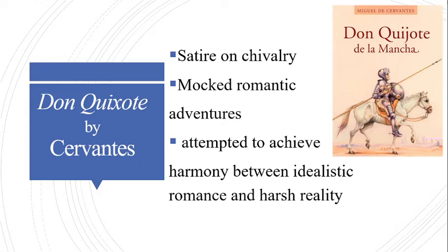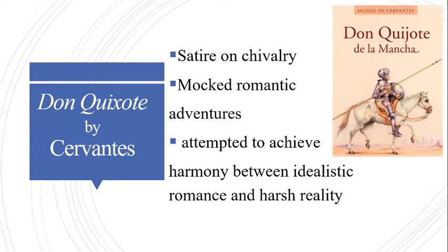The novel is said to be actually a rebellion against the escapist portrayal found in medieval romances. Another most important early novel is Miguel de Cervantes' Don Quixote. It mocked chivalry and romantic adventures and attempted to achieve a harmony between idealistic romance and harsh reality.